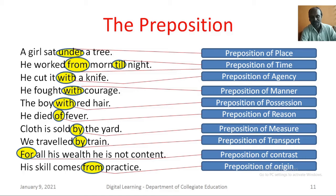He cut it with a knife — here, with is a preposition of agency. He fought with courage — here, with is a preposition of manner. The boy with red hair — here, with is a preposition of possession. He died of fever — here, of is a preposition of reason.